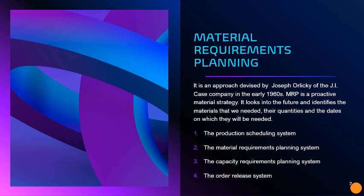Now let us proceed to material requirements planning. In the early 1960s, Joseph Arlicky of the GIK's company devised a new approach to material management called material requirement planning, or MRP. MRP is a proactive material strategy that looks into the future and identifies the materials needed, their quantities, and the dates on which they will be needed. There are four categories in this approach: first, the production scheduling system; second, the material requirements planning system; third, the capacity requirements planning system; and fourth, the order release system.